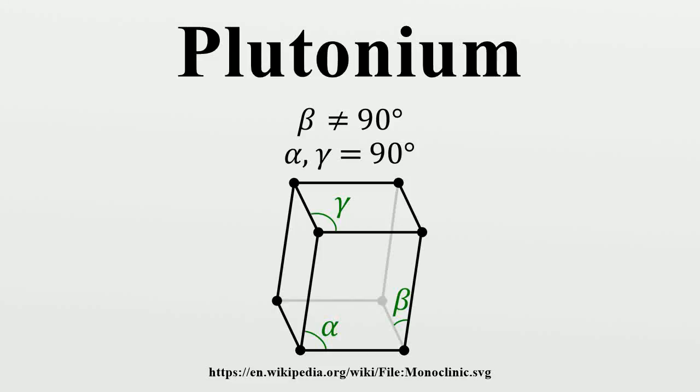Plutonium is a transuranic radioactive chemical element with symbol Pu and atomic number 94. It is an actinide metal of silvery-gray appearance that tarnishes when exposed to air and forms a dull coating when oxidized.